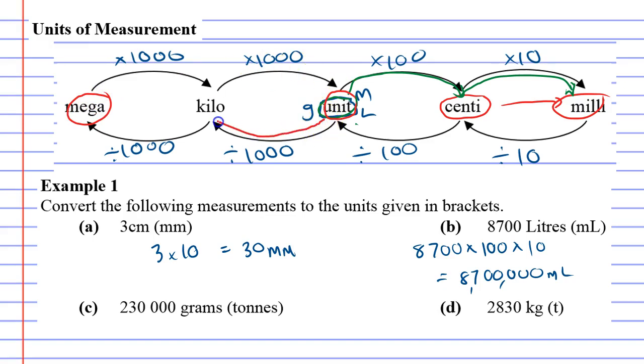We need to do two steps again, but this time going left on the diagram. It tells us to divide by a thousand twice. So we take 230,000 and divide by a thousand twice, which equals 0.23 tons.